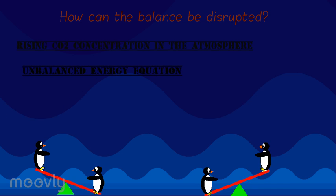Then what would happen? If the climate is warmer, icy and snowy regions would begin to melt. Snow and ice are major reflectors on the surface and produce the most albedo. If there is less snow and ice, there will be less albedo, and this will cause the energy to become unbalanced.